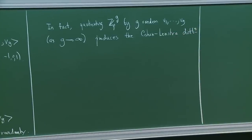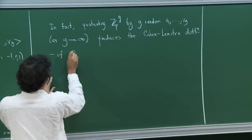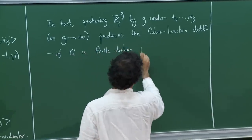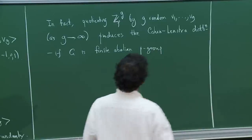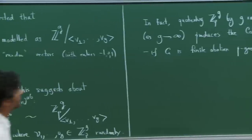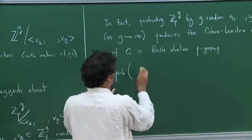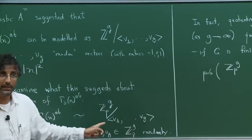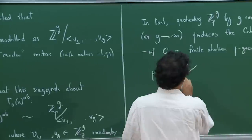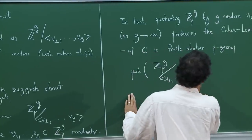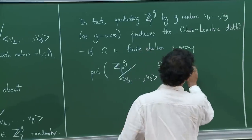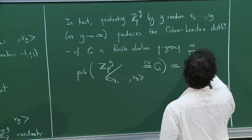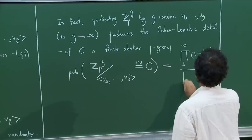It produces the Cohen-Lenstra distribution. If G is a finite abelian p-group, then taking a g-by-g matrix of p-adic numbers at random and quotienting by the rows of that matrix, the probability that you get G will be exactly the Cohen-Lenstra probability: the product from 1 to infinity of (1 minus 1/p^i), divided by the number of automorphisms of G.